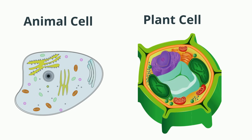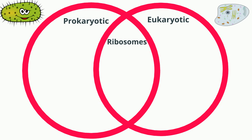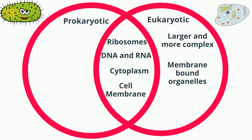Let's take a look at the similarities and differences between prokaryotic cells and eukaryotic cells. Both have ribosomes, genetic material such as DNA and RNA, cytoplasm, and a cell membrane surrounding them. Eukaryotic cells are large, more complex, contain membrane-bound organelles, and can be either unicellular or multicellular.